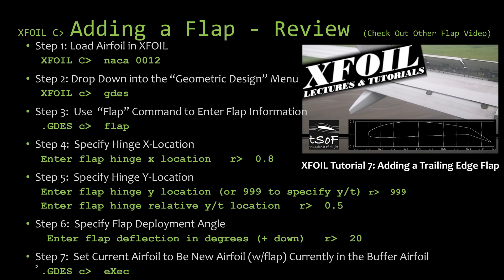The steps we went through were first loading an airfoil into X-Foil, then going to the geometric design menu, using the flap command to specify the flap information including X location, Y location, and the flap angle deflection. The last step that is often forgotten is we used the exec command to move it from the buffer airfoil into the current airfoil. If you have any questions on these steps, check out that other video.